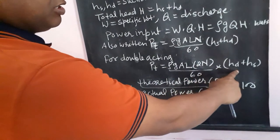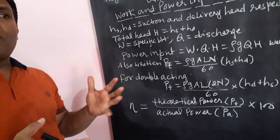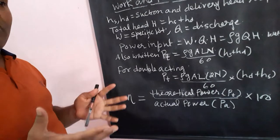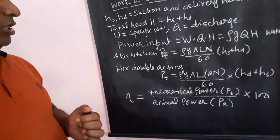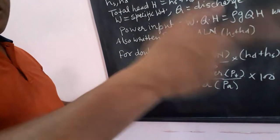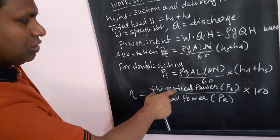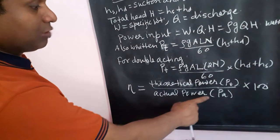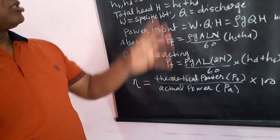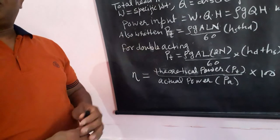For a double acting pump, the theoretical power becomes ρ×g×(2A×L×N/60)×(H_S + H_D). Theoretical power is always less than actual power, where actual power is the power required to run the reciprocating pump. The efficiency of the reciprocating pump is: efficiency = (theoretical power / actual power) × 100.